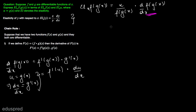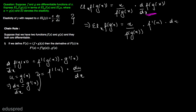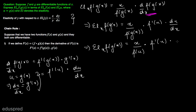Now using this formula and substituting into the elasticity equation, the elasticity of f(g(x)) with respect to x is equal to x divided by f(u), multiplied by f prime of u, multiplied by the derivative of u with respect to x, where we substitute u equal to g(x).